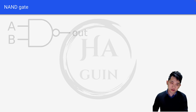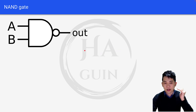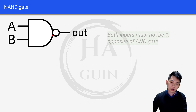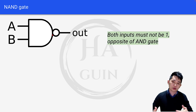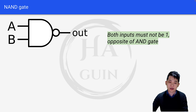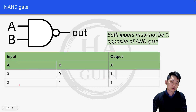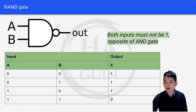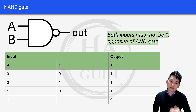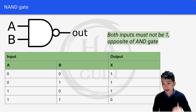Next we have NAND gate. This is the symbol of NAND gate — it looks exactly like the AND gate, it's just that it has an extra circle here. In order for the output to be 1, both inputs must not be 1, which is the opposite of AND gate. So: 0, 0 is equal to 1; 0, 1 is equal to 1; 1, 0 is equal to 1; and 1, 1 is equal to 0. Both inputs cannot be 1, which is exactly opposite of AND gate.